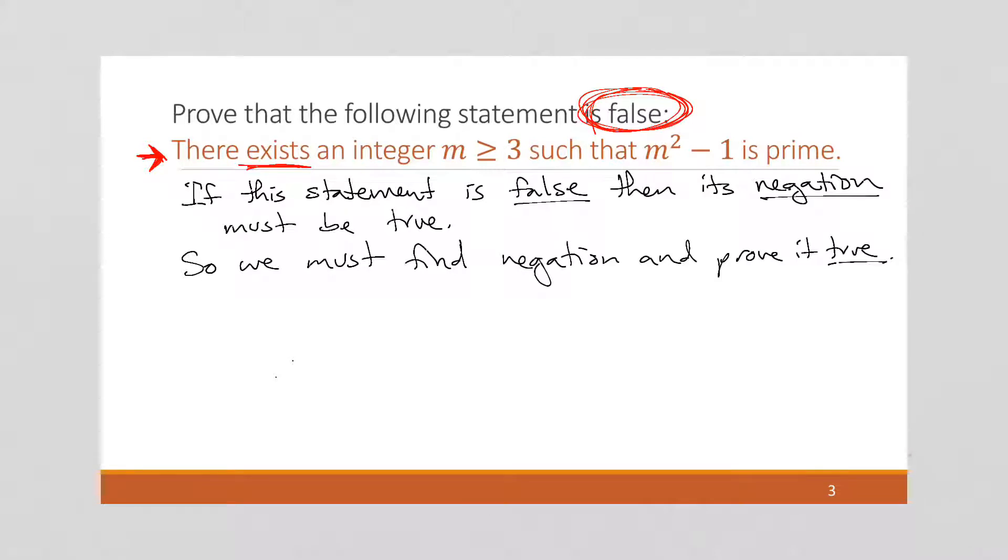Okay, so let's figure out what the negation of this is. I'm going to rewrite this formally. As there exists an integer m. So that means, so now let's do, there exists an m greater than or equal to 3, where m is an integer, and m squared minus 1 is prime.